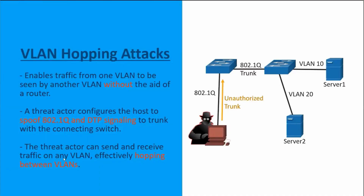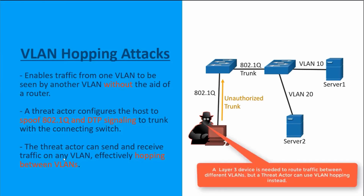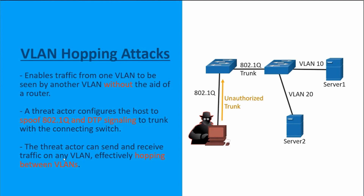A VLAN hopping attack is going to enable traffic from one virtual local area network to be seen by another virtual local area network, and this is without the aid of a device such as a router. This is a basic VLAN hopping attack. A threat actor is going to configure a host to act just like a switch, and then using that host, they're going to take advantage of the automatic trunking port feature that's enabled by default on most switch ports.